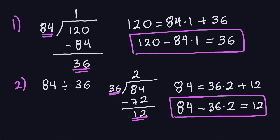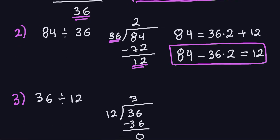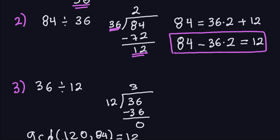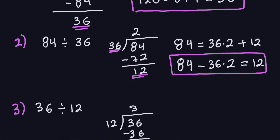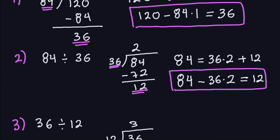The last step is where we realize the greatest common divisor is 12, because when we divide next we get remainder 0. So 12 is the GCD and we stop. You don't write down this last equation — just stop at the previous step. What you need to do now is refer back to the equations you marked down in the boxes, because the last marked equation contains the greatest common divisor.